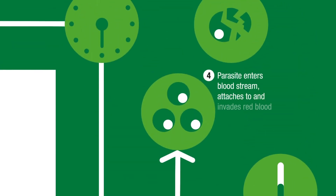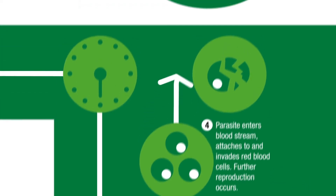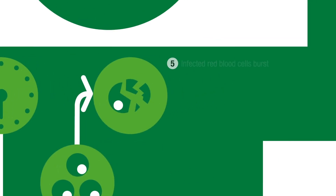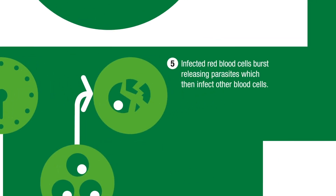The parasite enters the bloodstream, attaches to, and invades red blood cells, where further reproduction occurs. The infected red blood cells then burst, releasing parasites, which go on to infect other blood cells.